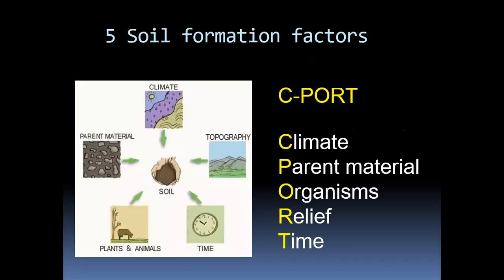If we look at the soil, there are basically five soil formation factors: climate, parent material, organisms, relief or topography, and time. The interaction between these five factors — happening at the same time and at the same place — is what makes the soil form.